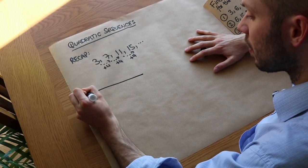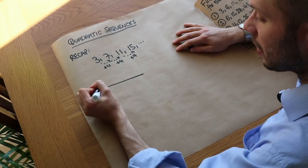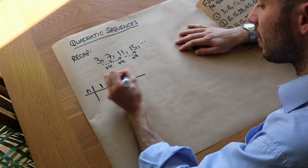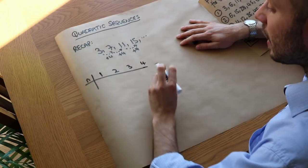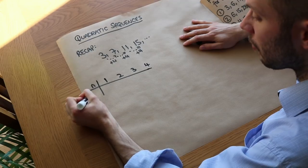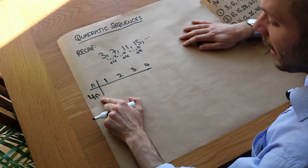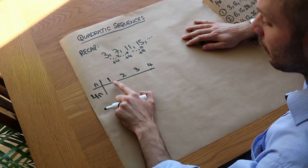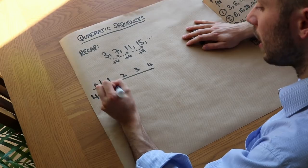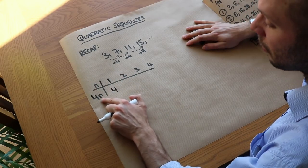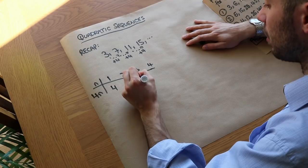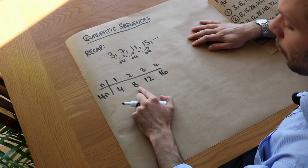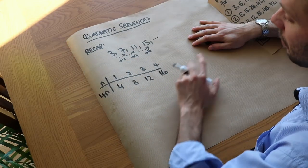If we do this as a table, n is the position — so in the first term n is 1, second position, third position, fourth position. If we had the formula 4n, what would it give us? Well the first term would be 4 times 1, which is 4. The second term would be 4 times 2, which is 8. The third term gives 12, the fourth gives 16. But we don't want 4, 8, 12, 16 — we actually want 3, 7, 11, 15.